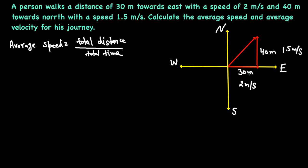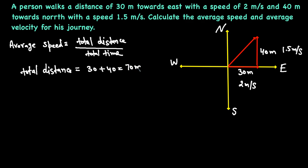The total distance in this case: the person moved 30 meters towards east and 40 meters towards north, so total distance traveled equals 30 meters plus 40 meters, which gives 70 meters.